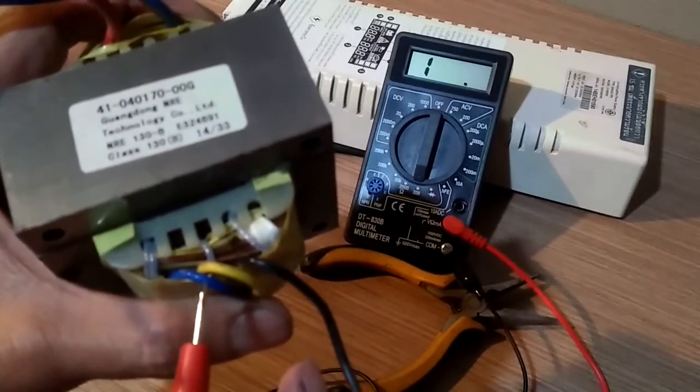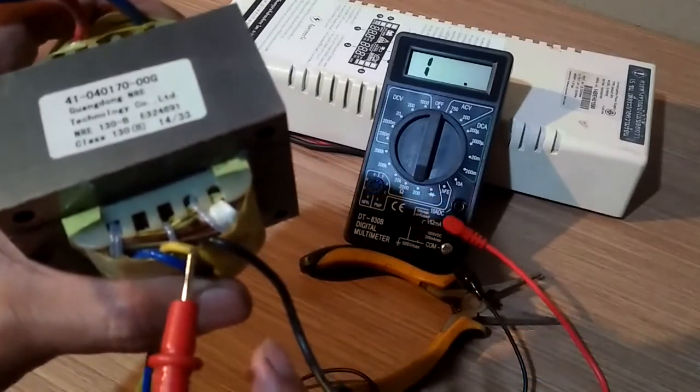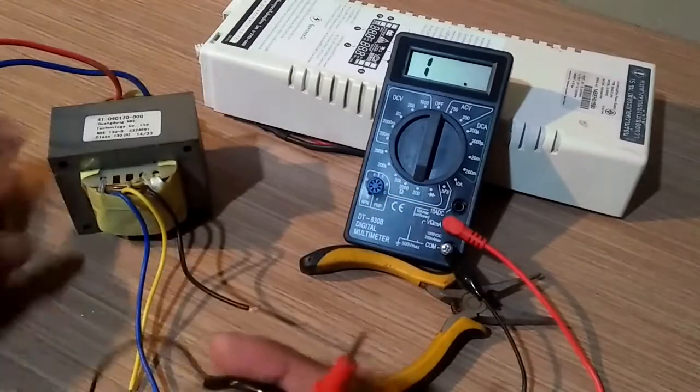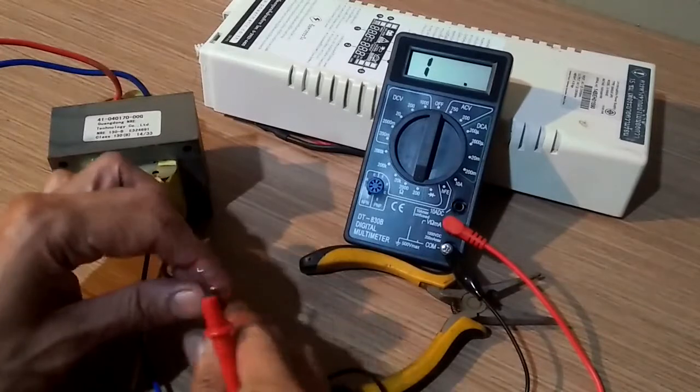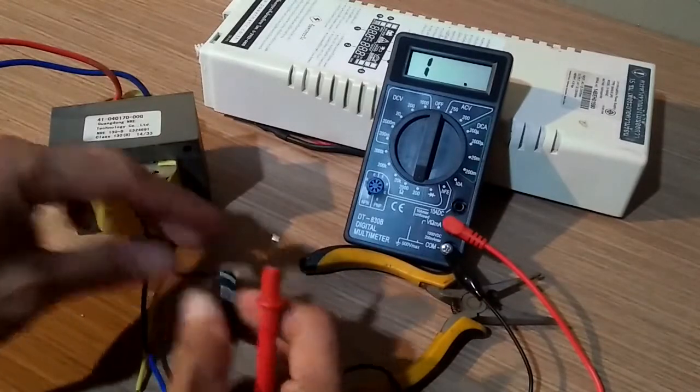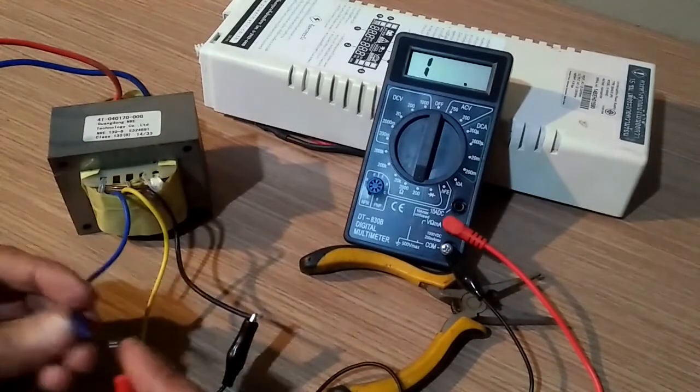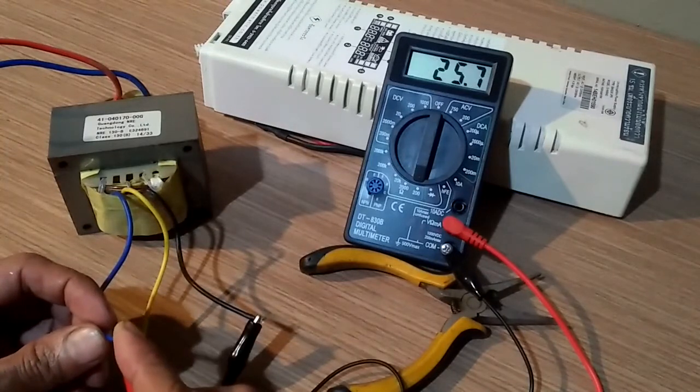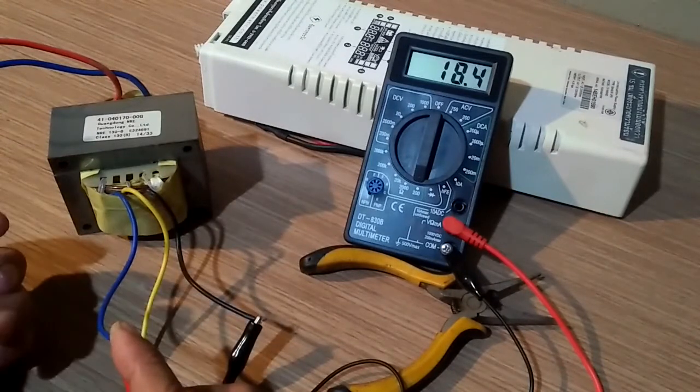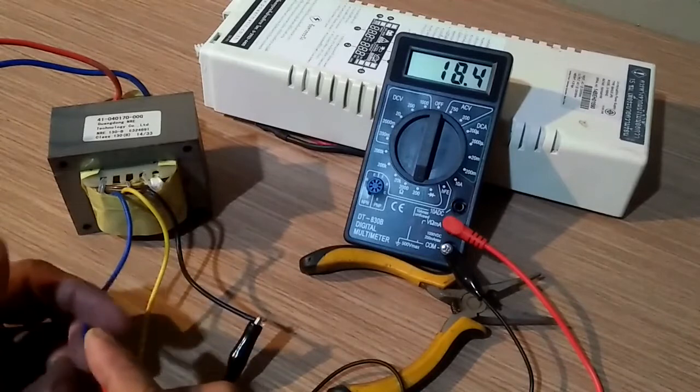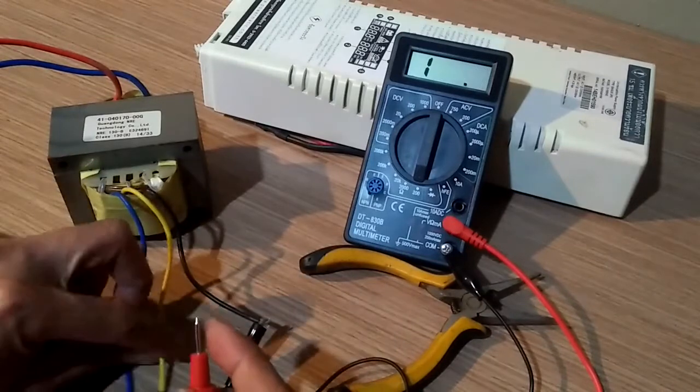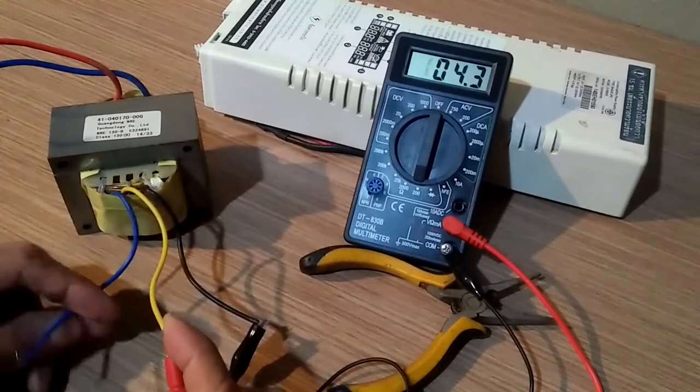We have 220 volts AC in the wall outlet where I live and I need to figure out which of these wires should be connected to the wall outlet. I took some resistance measurements among the three wires of the primary to find out which one has the greatest resistance, just to be sure.